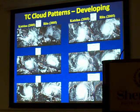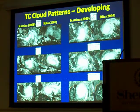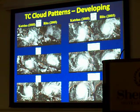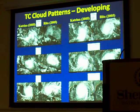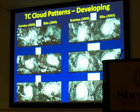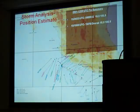Both storms reached at least T7; Rita was actually a T8, which is the highest on the scale. The Dvorak method is tried and true — we can use it on any tropical cyclone in any basin and it's very, very accurate. Of course, how accurate the intensity estimate is depends on both the analyst and his or her experience, so there is quite a bit of training that takes place at the hurricane center with regard to the Dvorak technique.